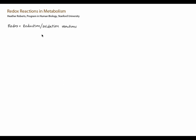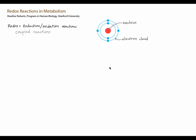Redox reactions stand for reduction-oxidation reactions, and they're central to cell metabolism. Redox reactions are necessarily coupled reactions in which a reduction is paired with an oxidation. To understand redox, think back to atomic structure. Atoms are made of protons, neutrons, and electrons. Electrons are carried in electron clouds that orbit around the nucleus. Reduction and oxidation reactions loosely refer to processes that change the number of electrons around a given atom or in a given molecule.